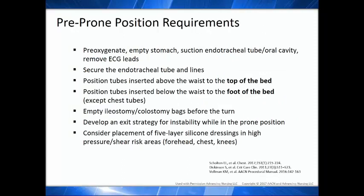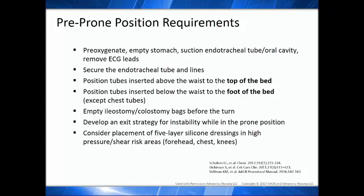Things to consider before turning: pre-oxygenate, empty or allow the stomach to digest, suction the endotracheal tube, and double-secure it because you'll get a lot of secretions when you go prone. Cut the body in half conceptually — any lines above the waist go to the head of the bed; lines below go to the base — because you're rotating the patient like a rotisserie spit 180 degrees, and the lines will cross and cross back. Always have a person at the head holding the endotracheal tube — not the ventilator tubing — and they don't let go until there's an all-clear. Develop an exit strategy if you need to return them quickly, and place five-layer silicone or shear-reducing dressings on the face, chest, and pelvic areas.